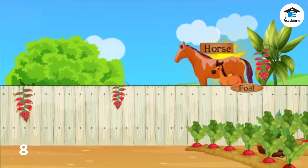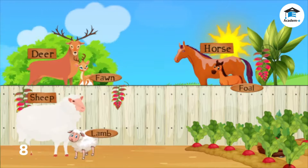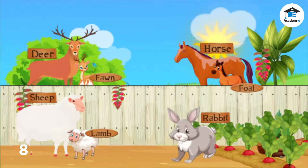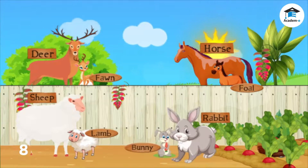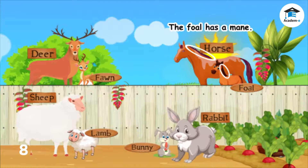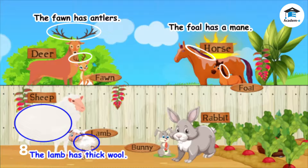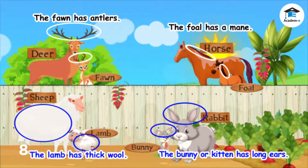The young of a horse is called a foal. The young of a deer is called a fawn. The young of a sheep is called a lamb. The young of a rabbit is called a bunny or a kitten. Like the animals shown earlier, these young animals also look the same as their parents. The foal also has a mane like its parent. The fawn also has antlers like its parent. The lamb also has thick wool like its parent. And the bunny or kitten also has long ears like its parent. The special body parts that these young animals have make them different from one another and from other animals.